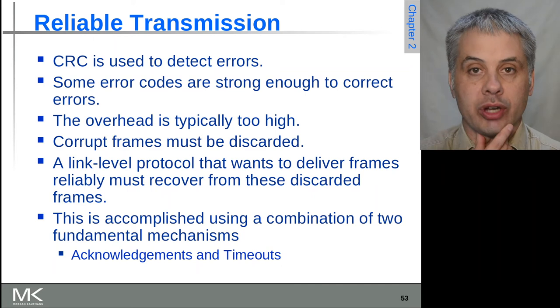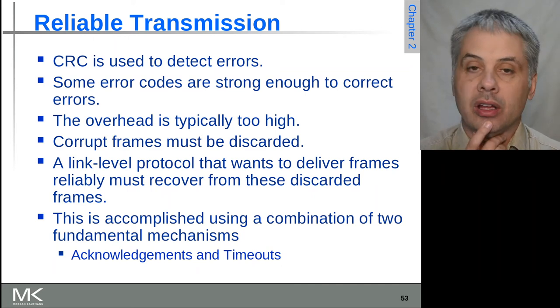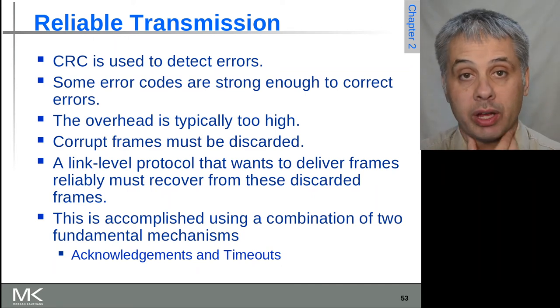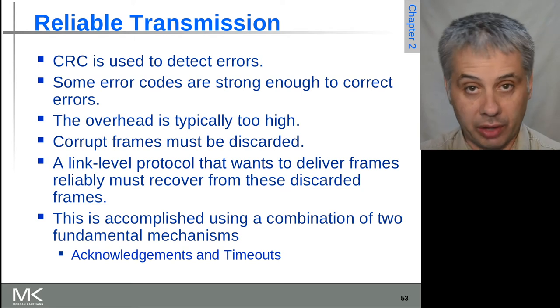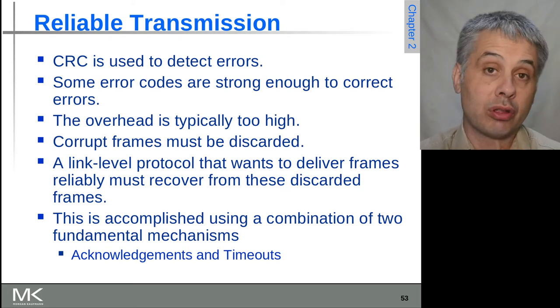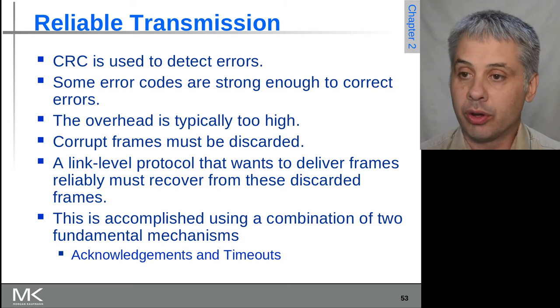There's a couple of different ways that we can handle this retransmission approach. We can either have active acknowledgements where every time you send a frame the receiver has to acknowledge that they received it, or you can use timeouts to work out when one hasn't been received.